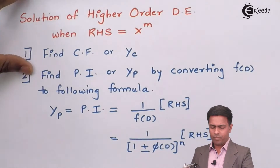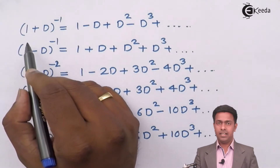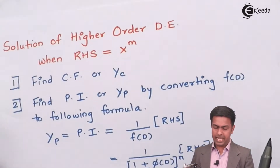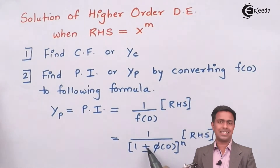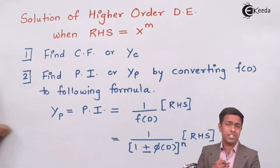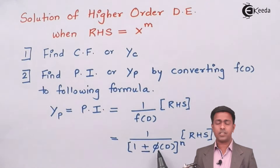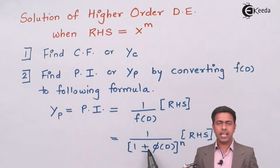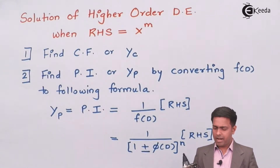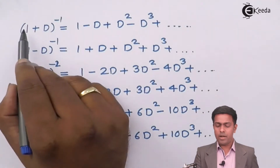Here are the six formulas. Let's say n equals 1 and we get a plus sign: that gives us 1 plus φ(D) raised to minus 1. We will always try to bring the denominator into the form 1 plus or minus φ(D), and we may encounter one of these six cases. In the first case we get a plus sign with power 1.